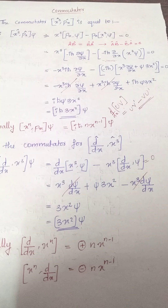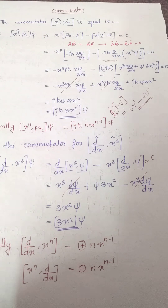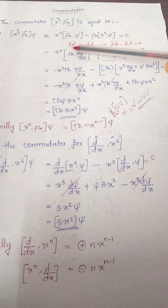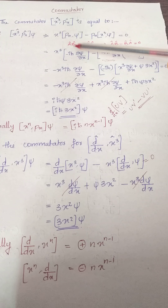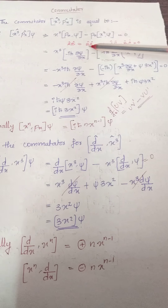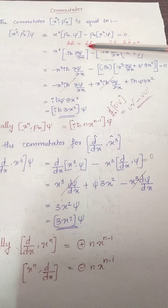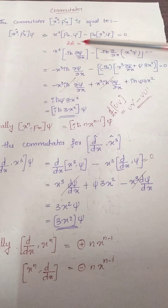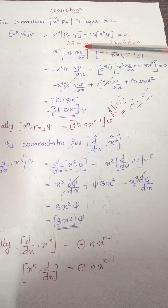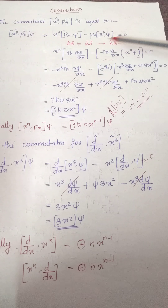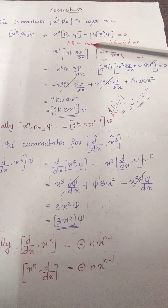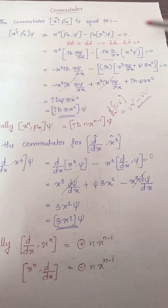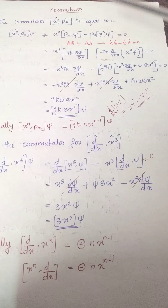As we all know, for some function, if it is commuting with each other, the order is very important. If b operator is acting upon a operator and according to this, a operator is acting upon b operator, and if both the values are equal, then these two are commuting with each other and we will be able to write this commutator in this format. That means we are just taking this one to the left hand side and equating with zero.